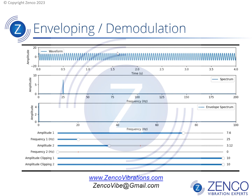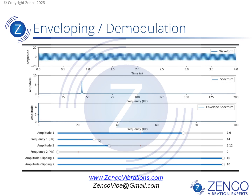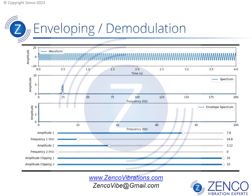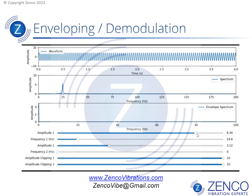So first of all, we have a sine wave over here, and we have a spectrum of that. I can change the frequency of the sine wave — higher frequency, lower frequency — and you see the peak moving in the spectrum. I can change the amplitude of that sine wave going up, going down, and you see the peak in the spectrum also going up and going down.